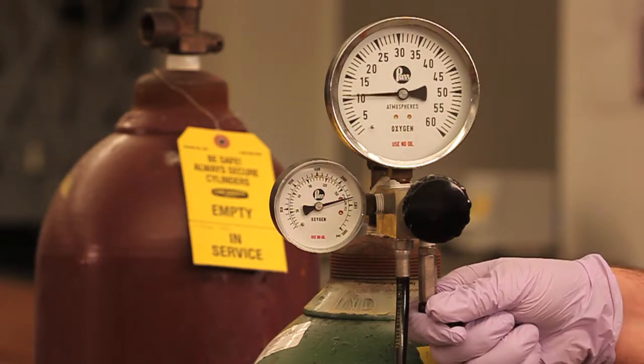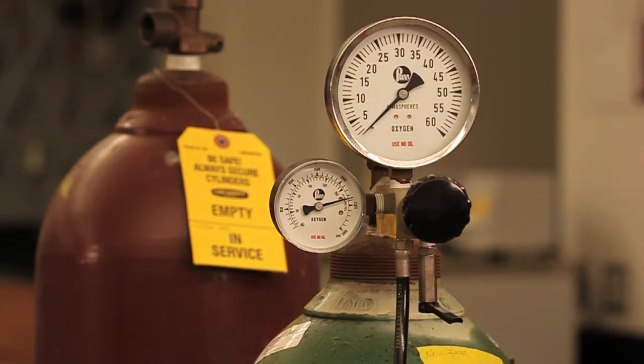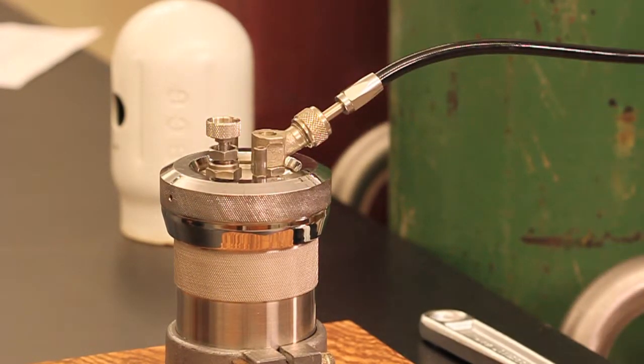Vent the fill line by opening the black toggle valve. If you don't remember to do this, there will be a quick gas release when you remove the gas connection. This can be loud. At this point,